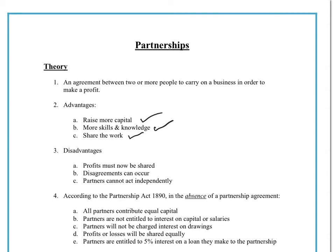The disadvantages of a partnership are that you now have to share the profits. When you're on your own as a sole trader, you get to keep all the profits. Whilst a partnership will generate more ideas, it could also create more arguments because everyone believes their idea is the correct one. Partners usually are not allowed to act on big decisions independently, so they have to all agree before they can move on major decisions. Obviously that takes a lot of time, and time is money in business, and that could also be considered a disadvantage of a partnership.